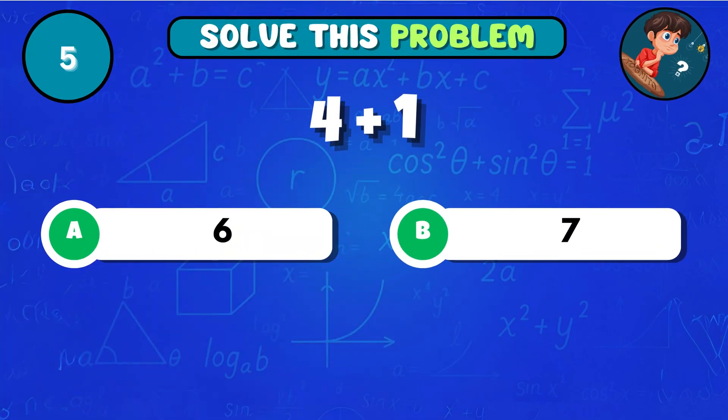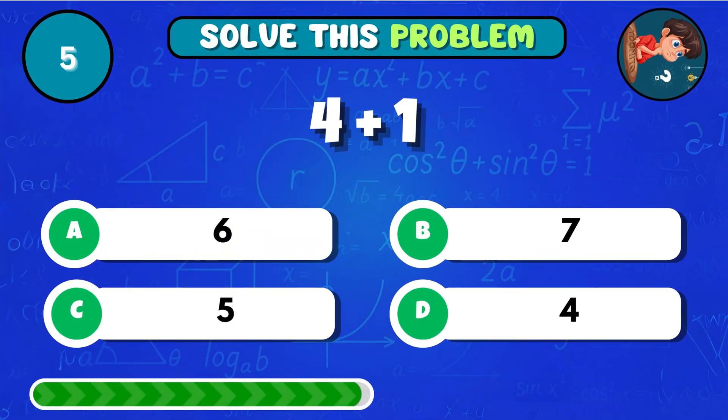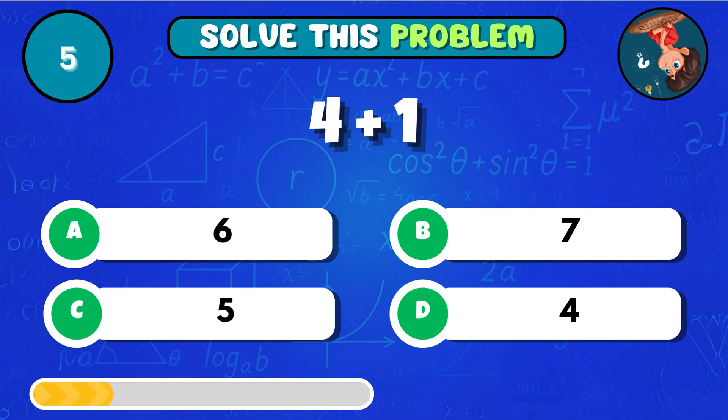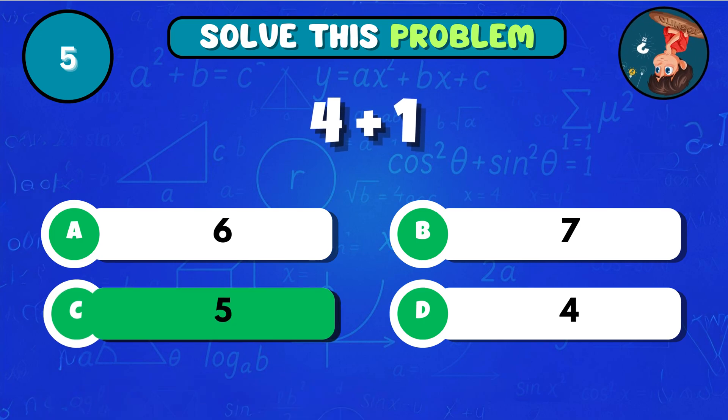If you take 4 and add 1, what's the total? That would be C 5!